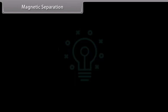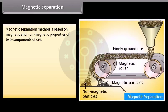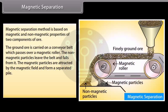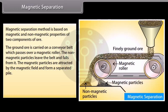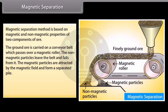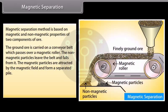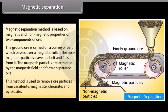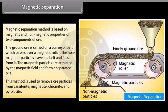Magnetic separation. Magnetic separation method is based on magnetic and non-magnetic properties of two components of ore. The ground ore is carried on a conveyor belt which passes over a magnetic roller. The non-magnetic particles leave the belt and fall off from it. The magnetic particles are attracted by the magnetic field and form a separated pile. This method is used to remove ore particles from casitrite, magnetite, chromite and pyroleucite.